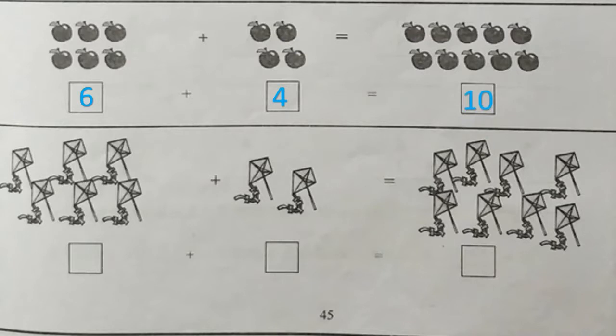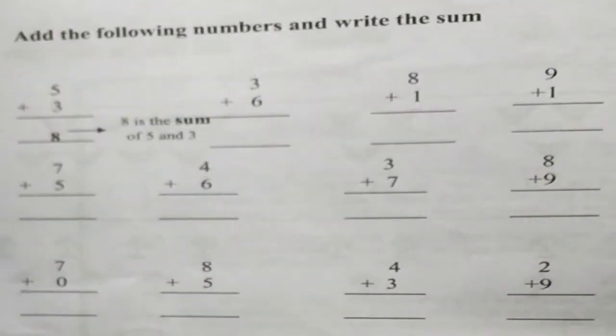Next, there are six kites. To that we shall add two kites. Total how many kites are there? There are eight kites. Now let's turn to page number 46. You have to add the following numbers and write the sum. Count by keeping the bigger number in your mind and the smaller number on your fingers.